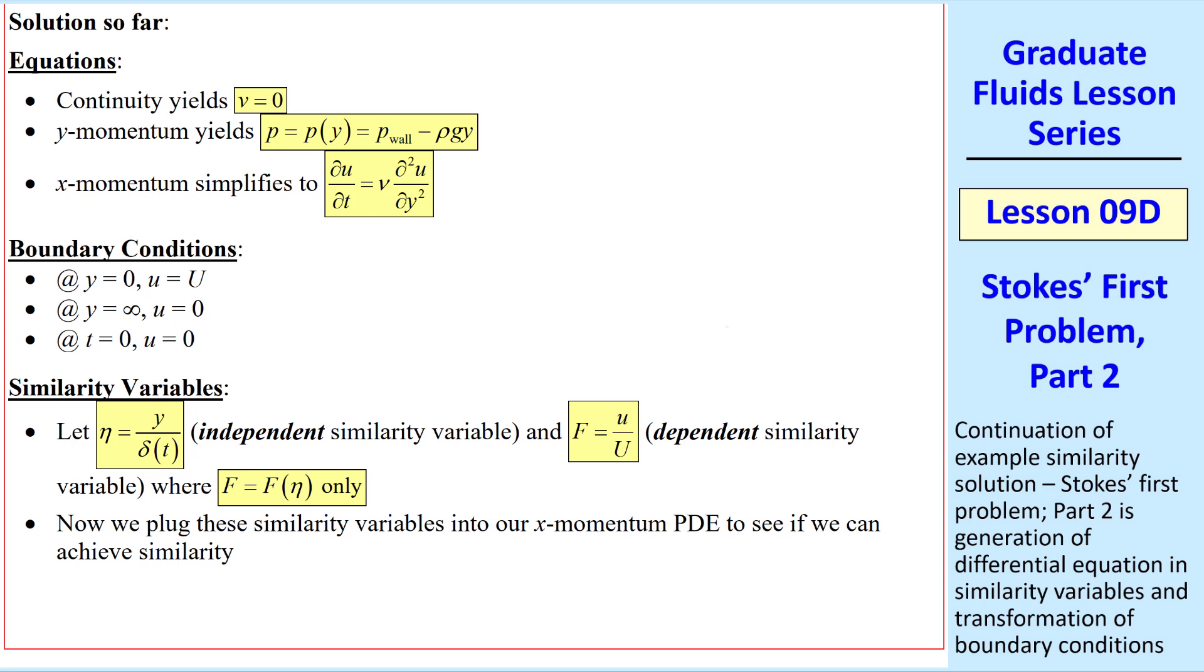In a previous lesson, we simplified continuity and momentum equations and found that v was zero everywhere, pressure was simply hydrostatic pressure, and our x-component of Navier-Stokes reduced to these two terms. And we have these three boundary conditions in what we'll call physical variables.